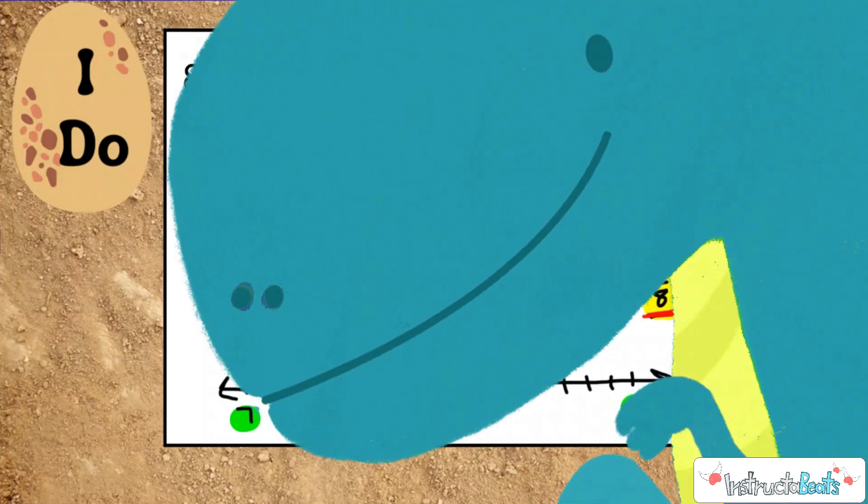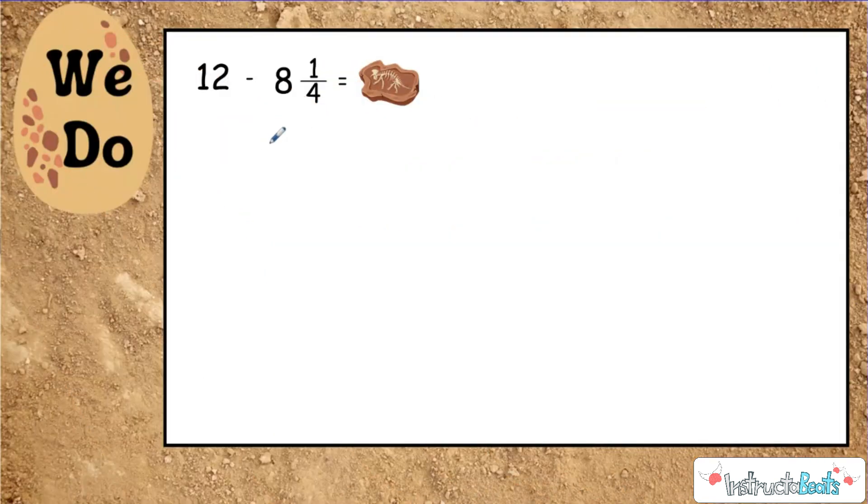Let's take a look at a we-do problem. So here we have a whole number minus a mixed number, and this is really when it's a lot easier and quicker to sometimes just mentally count up than to show all the regrouping. So we're trying to find out what is the value of this fossil right here. So let's rewrite it first as an addition equation. Looking for your missing addend, and of course your total would be twelve, because in subtraction your total is the number right in front of the subtraction sign.